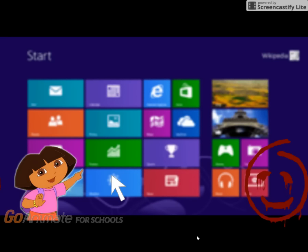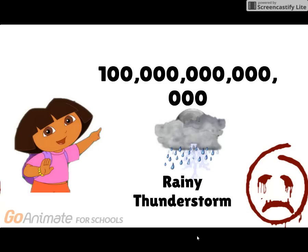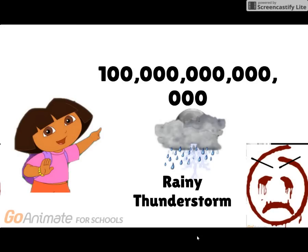Time to see what's my local weather. Today's weather in Mexico: it is 1,000,000,000,000,000 degrees with rainy thunderstorms. What the heck?! 1-0-0-0-0-0-0-0-0-0-0-0-0-0-0 degrees. What is wrong with you? I am closing the weather program.